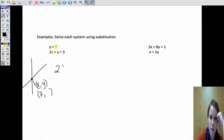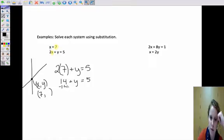So that's going to be 2, or for x, excuse me, 2 times 7 plus y will equal 5. So 14 plus y will equal 5. So minus 14 from both sides.